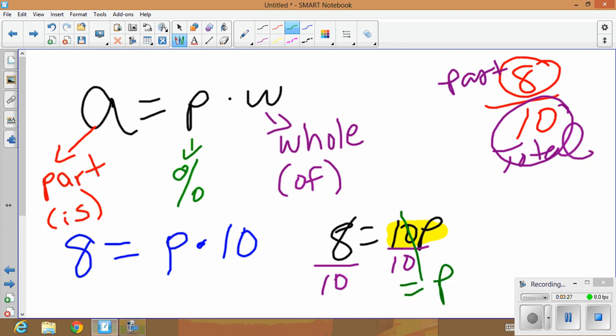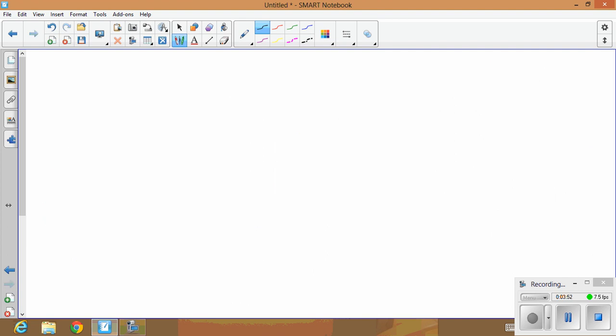10 divided by 10 cancels, leaving me with p. p equals 0.8. But 0.8 is not a grade, so what I actually need to do now is take 0.8 and convert it to a percentage. So if I take 0.8 and convert it, I get 80 percent. What we did is move the decimal twice to the right, or mathematically we're taking 0.8 and times in that by 100. Here's another example.